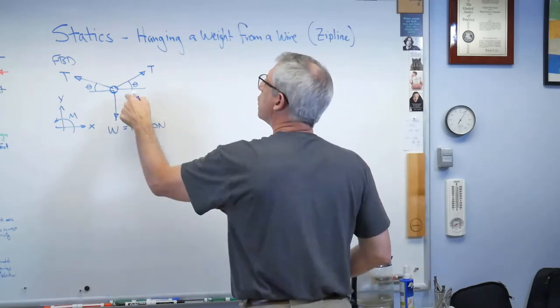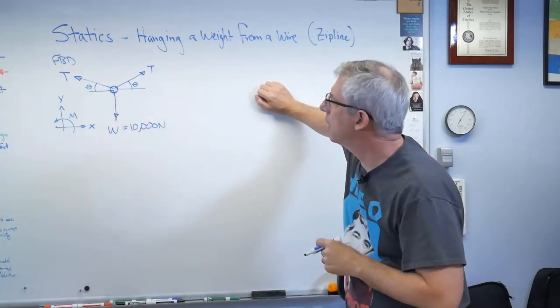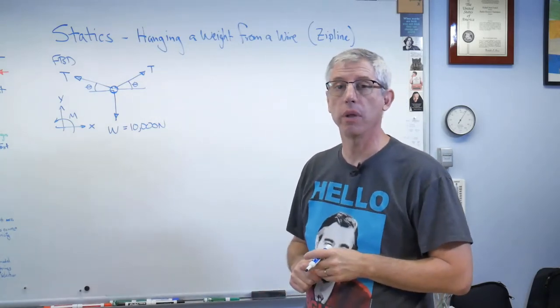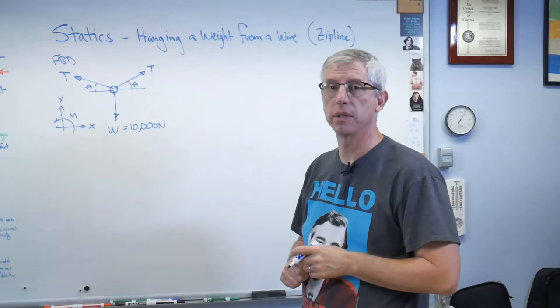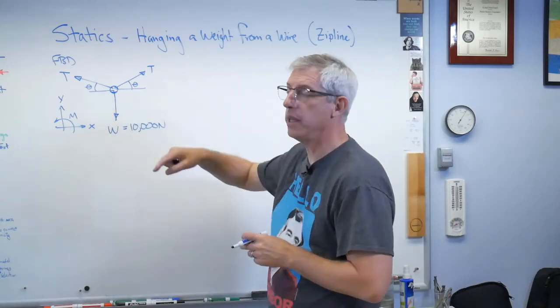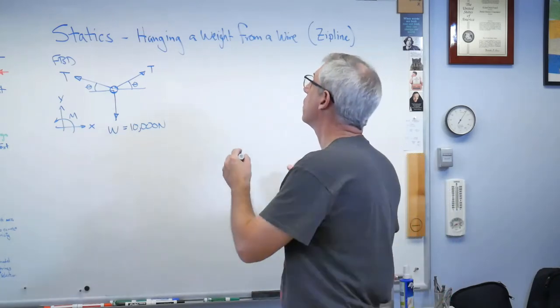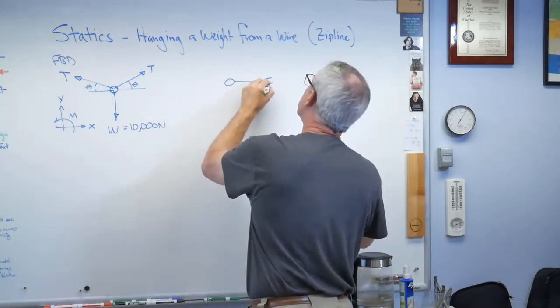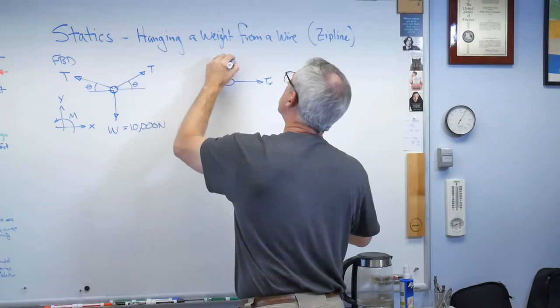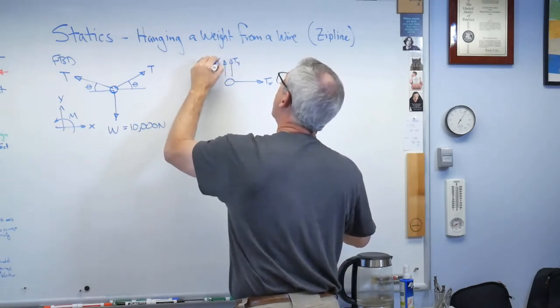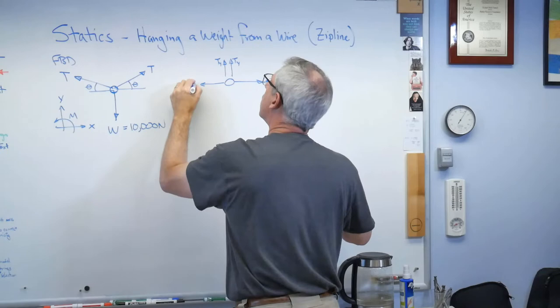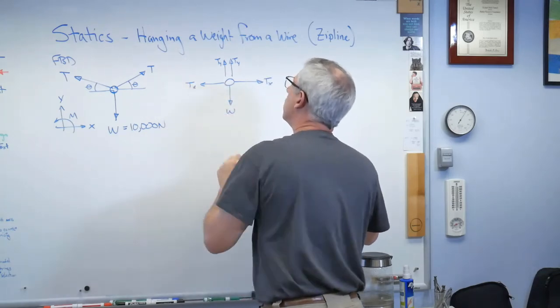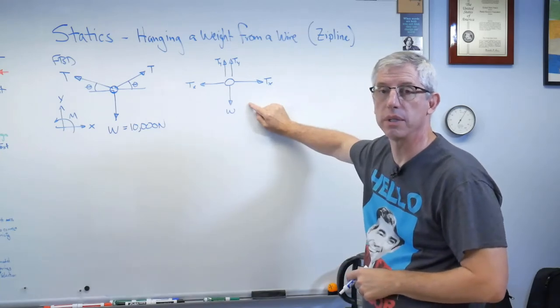The problem right now is that these two tensions are not lined up with my coordinate system. They're at some angle. So let's break these down into components so they are lined up with my coordinate system. There's tension in the x direction, tension in the y direction, another one from the other wire, tension in the x direction, and there's weight. Now everything's lined up with my coordinate system.